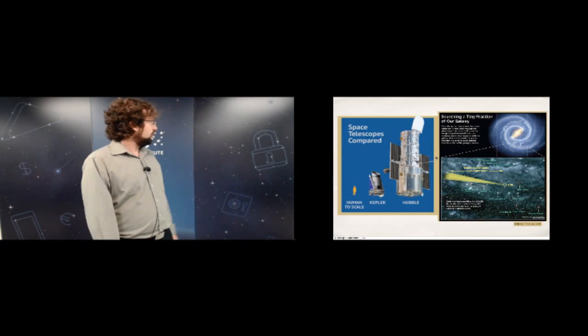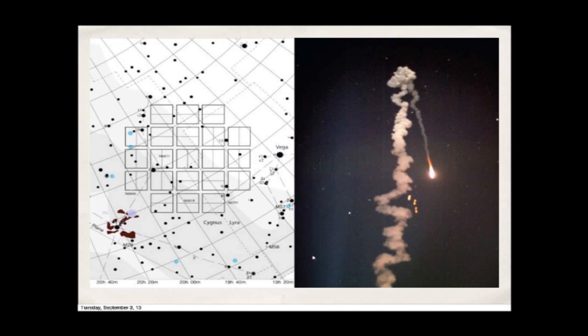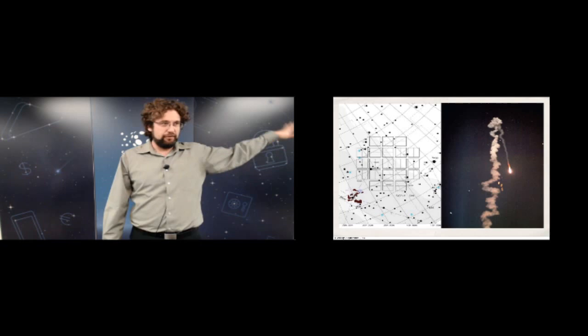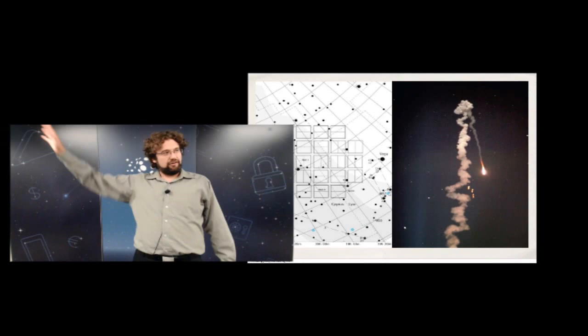Kepler looks at the nighttime sky between Vega and Cygnus. If you go out tonight and find Vega and Cygnus in the summer triangle, you can figure out where the Kepler field of view is. The photo on the right is a picture of Kepler from its 2009 launch at Cape Canaveral — the rocket going up, with yellow ember-like expended boosters falling down, and little star specks behind it, one of which is Tau Boo — an exoplanet-hosting star.